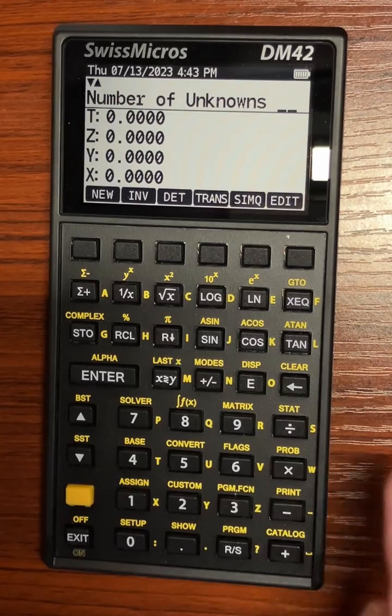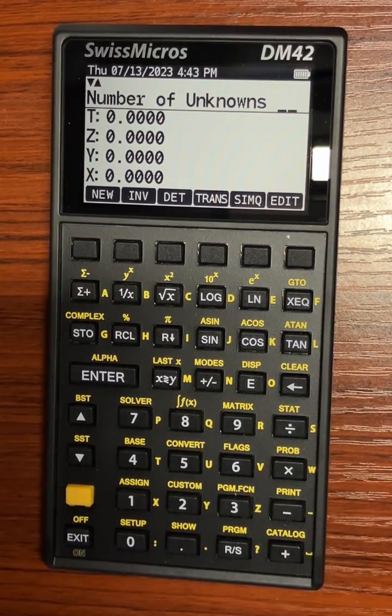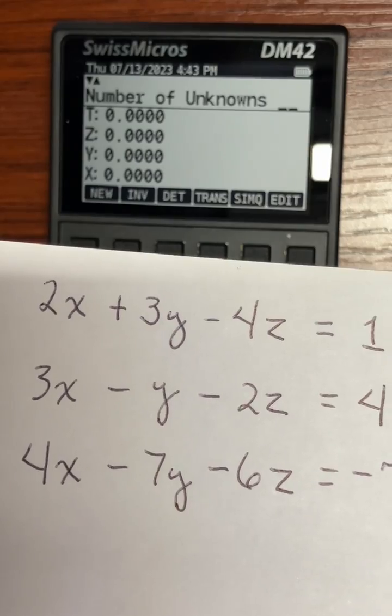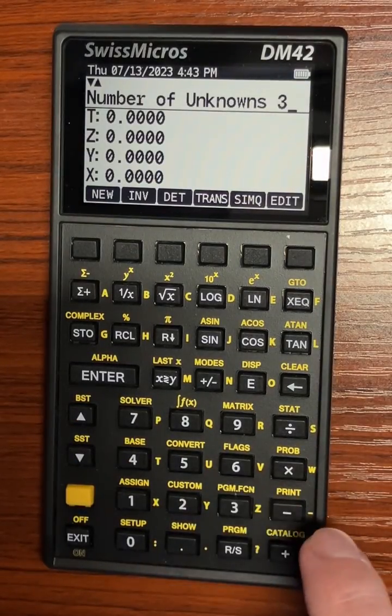You just enter that. It prompts you for the number of unknowns. We have three unknowns here, so enter three.